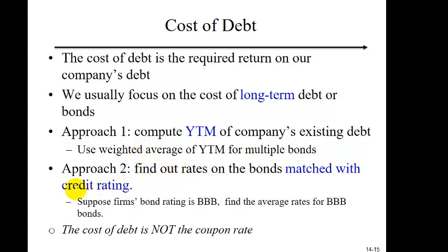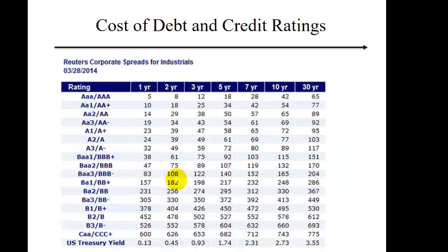The other approach is to use the credit rating. Suppose a firm's bond rating is BBB — find the average rates for BBB bonds. A word of caution: cost of debt is not the coupon rate; never use the coupon rate for cost of debt. Here is a table listing bond yield spreads by credit rating and maturity. For example, for BBB bonds with 5-year maturity, the average yield spread is 107 basis points, implying a yield to maturity of 1.07% plus 1.74% treasury yield, totaling 2.81%.